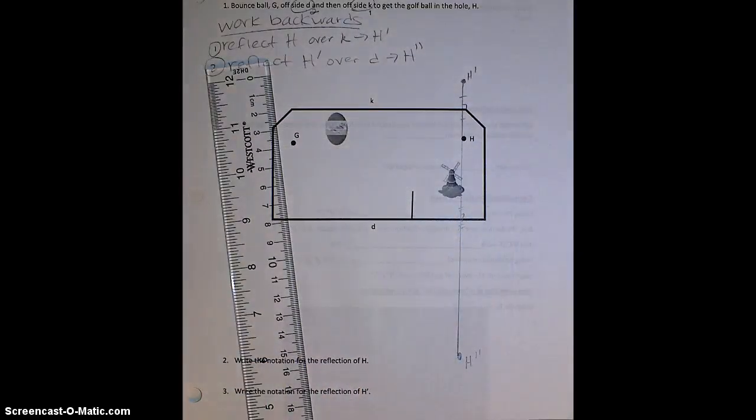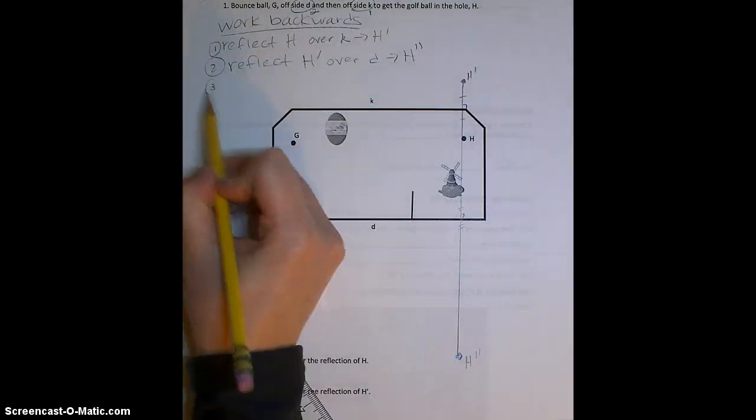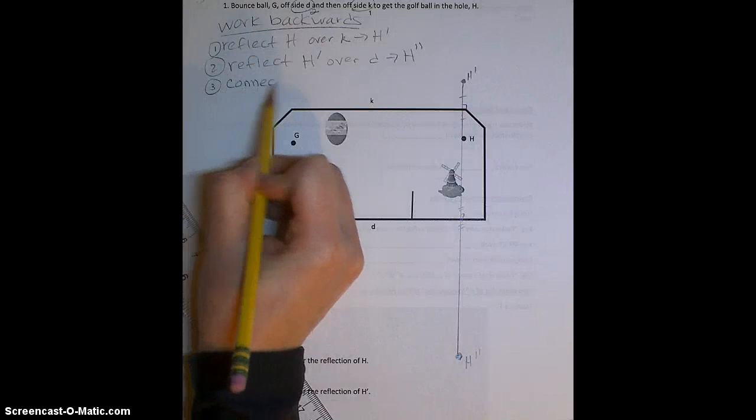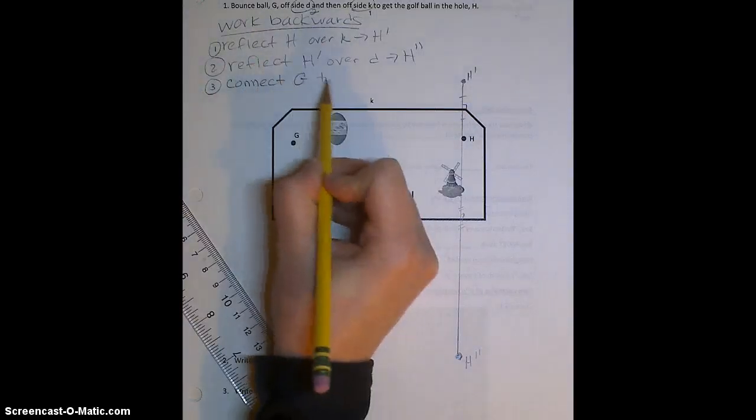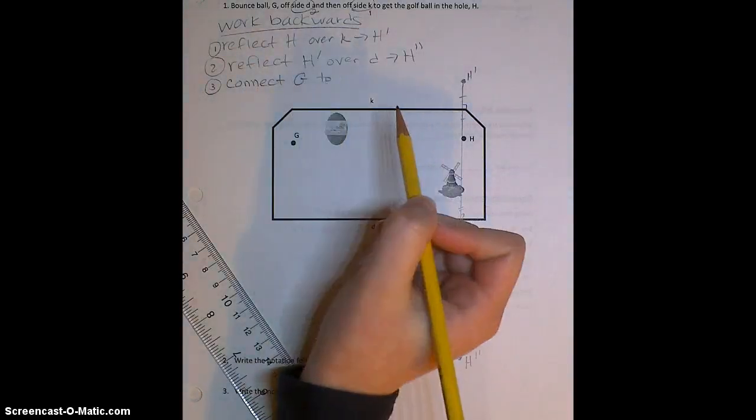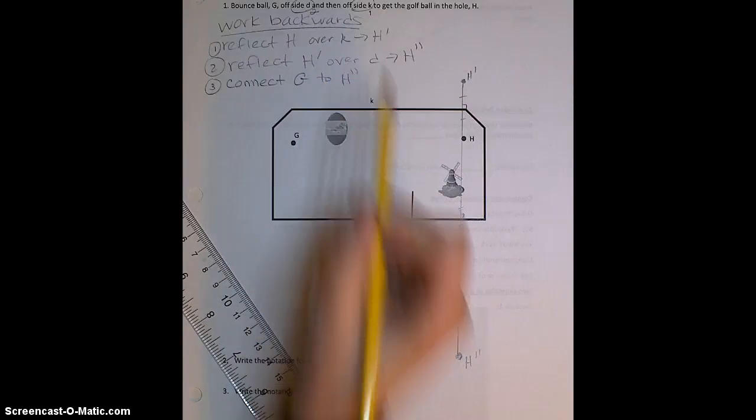And then also include my symbols. Once I have my two reflection points, then this is where I start connecting back to the start. So I want to connect G to my last reflection point, H double prime.